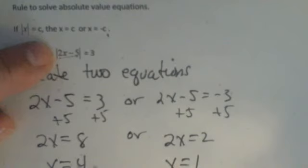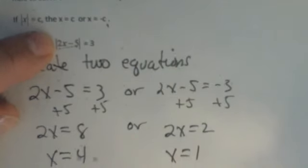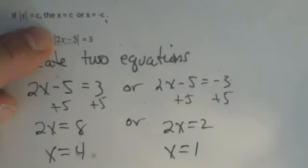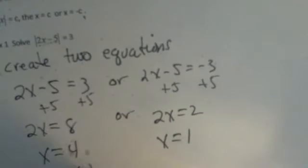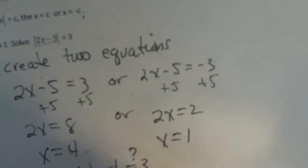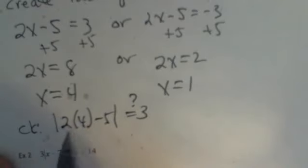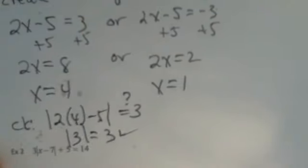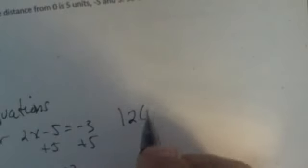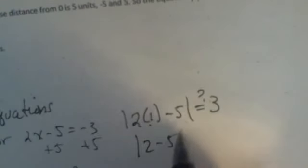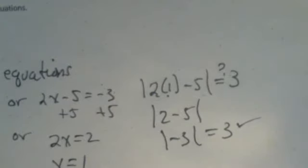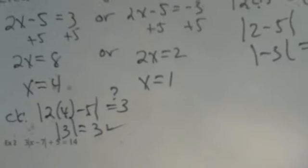Sometimes they're difficult, but for something like this, you know, to check it, I'll take 2 times 4 minus 5, and I want to know, does that give me 3? Well, 2 times 4 is 8, 8 minus 5, and the absolute value of 3 is 3. So that's a true statement. And I can check x equals 1. So 2 times 1 is 2. 2 minus 5 is negative 3, but when we're dealing with the absolute value of negative 3 is also 3. So we've made two true statements. So our answers are checked, and they are correct.